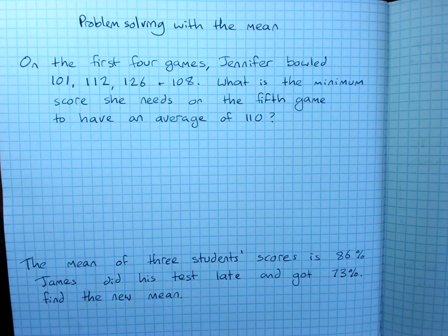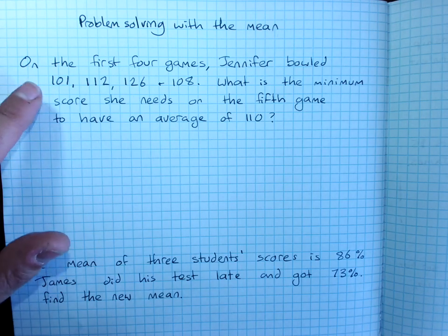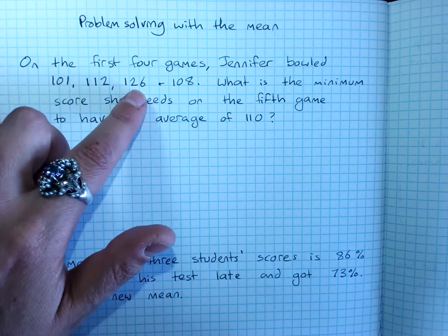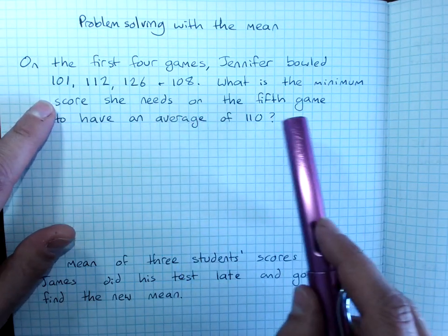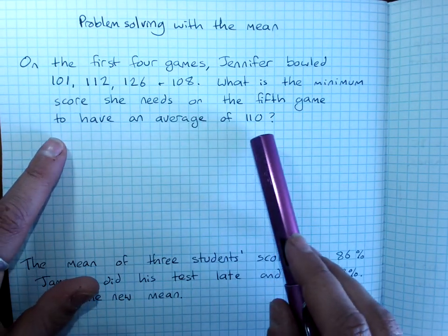Problem solving with the mean. On the first four games, Jennifer bowled 101, 112, 126, and 108. What is the minimum score she needs on the fifth game to have an average of 110?